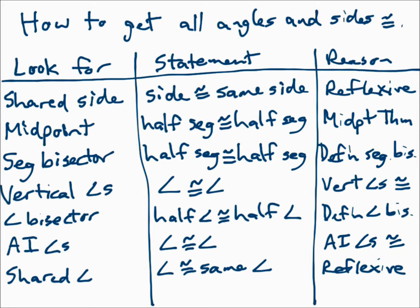Sometimes you have parallel lines with alternate interior angles — make those congruent because alternate interior angles are congruent. And sometimes the triangles share an angle; make that angle congruent to itself because of the reflexive property.